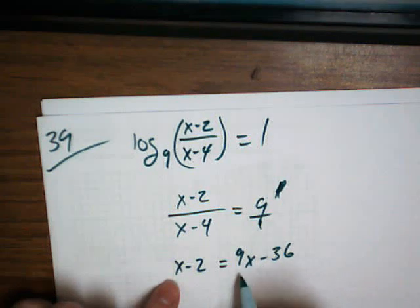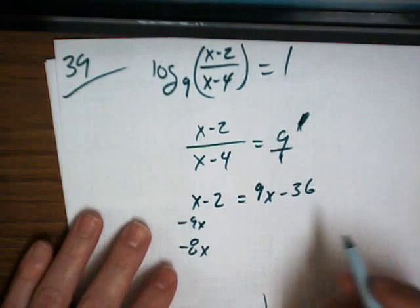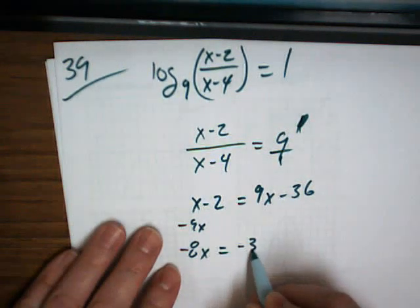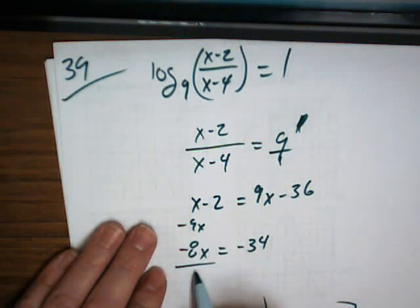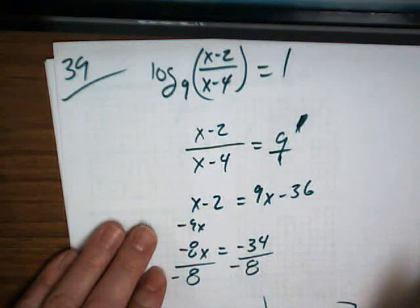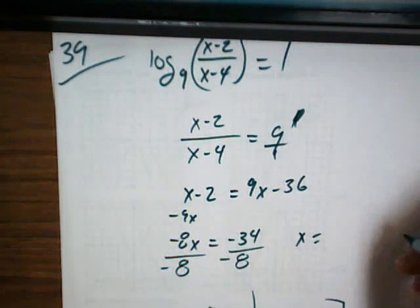Let's see, I subtract off my 9x. Negative 8x. I'm going to add off my 2. Divide by negative 8. And get x equals 34 eighths, which would be 17 fourths.